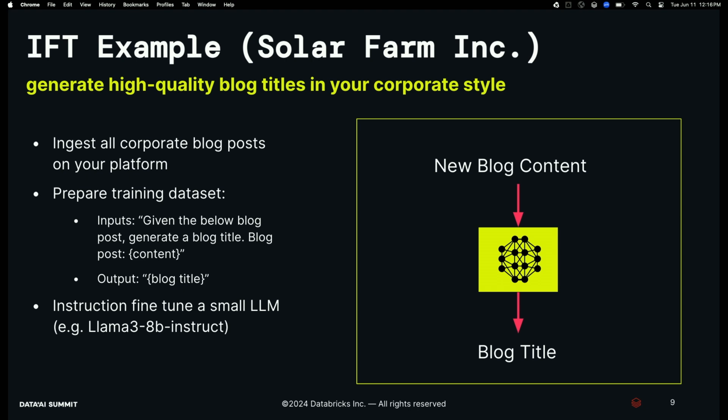Let me share a real customer example. This customer had a very prolific industry blog with articles going back years. They spent a lot of time tailoring headlines because that drives clicks, and they had a whole team reviewing and approving them. We came in and helped them fine-tune a model — Mistral 7B — to generate titles for them. We took all their historical blog data, ingested it, and used instruction fine-tuning. The whole thing only cost about $40, and they now have a system generating high-quality blog titles that has drastically cut down on their iteration time.